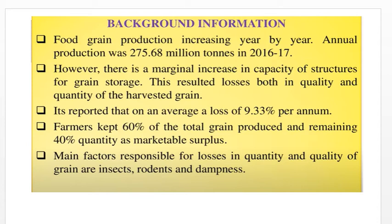Some background information: food grain production increases year by year in order to fulfill the demand of the increasing population in India. Annual production was 275.68 million tons in 2016-17. However, there has been only a marginal increase in the capacity of grain storage structures, resulting in losses both in quality and quantity of harvested grain.